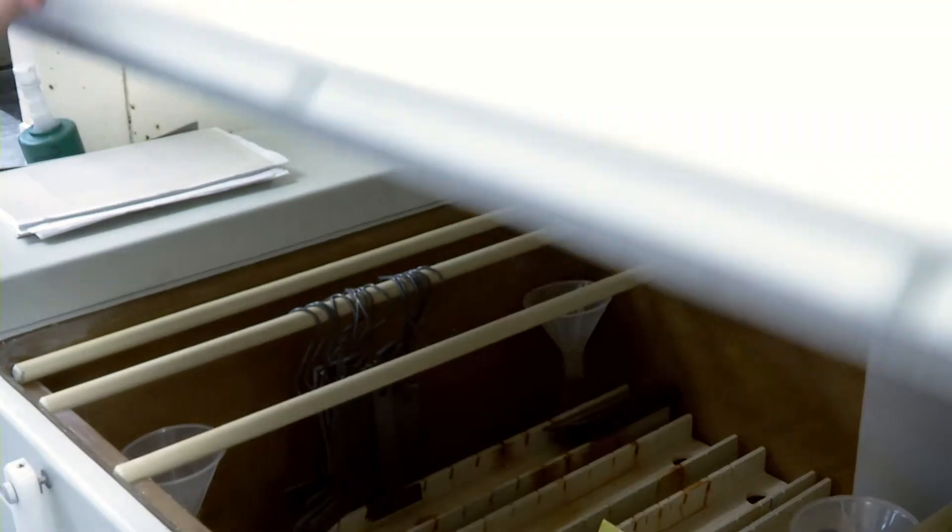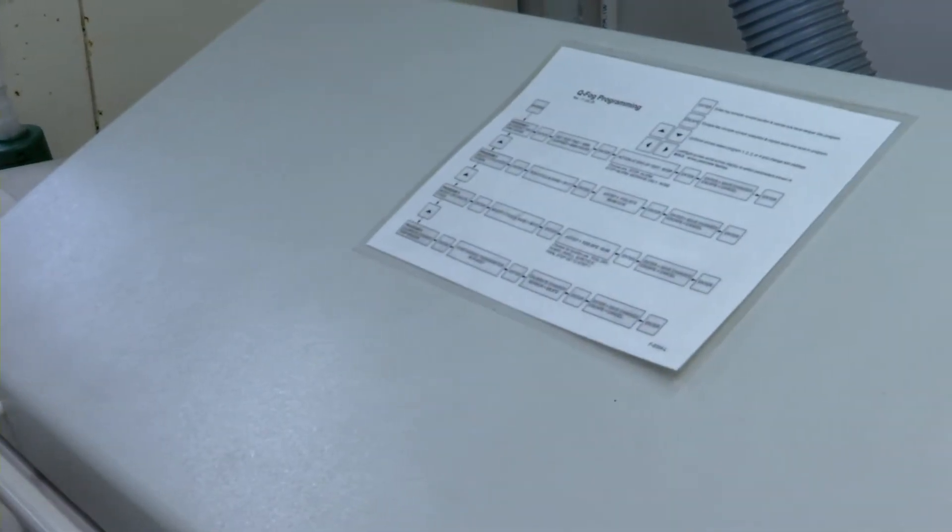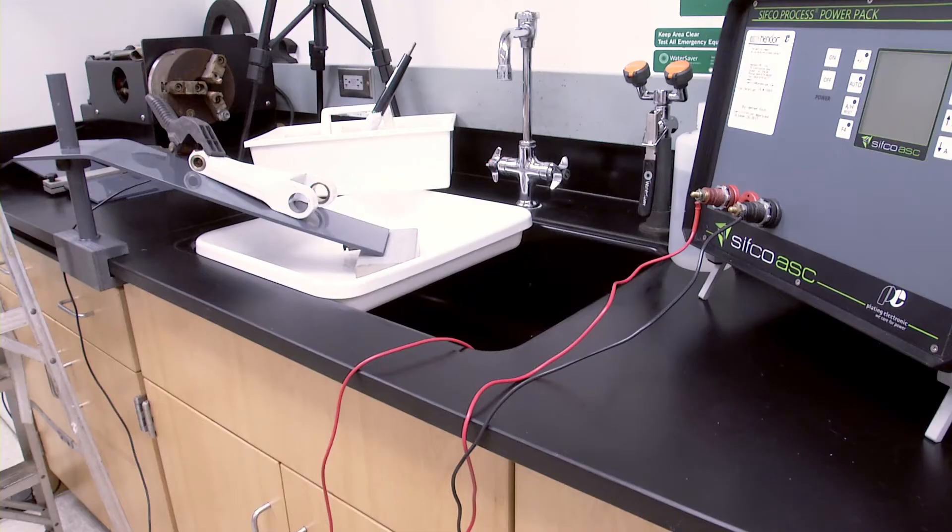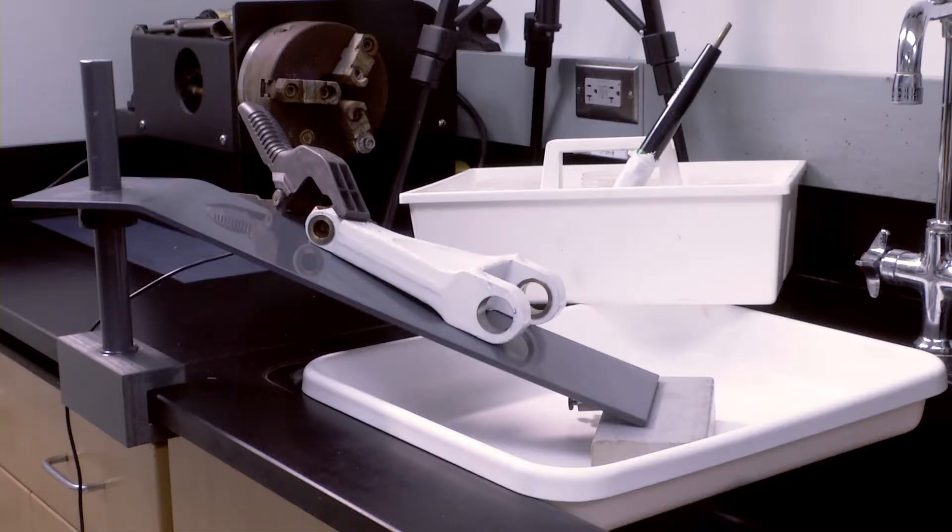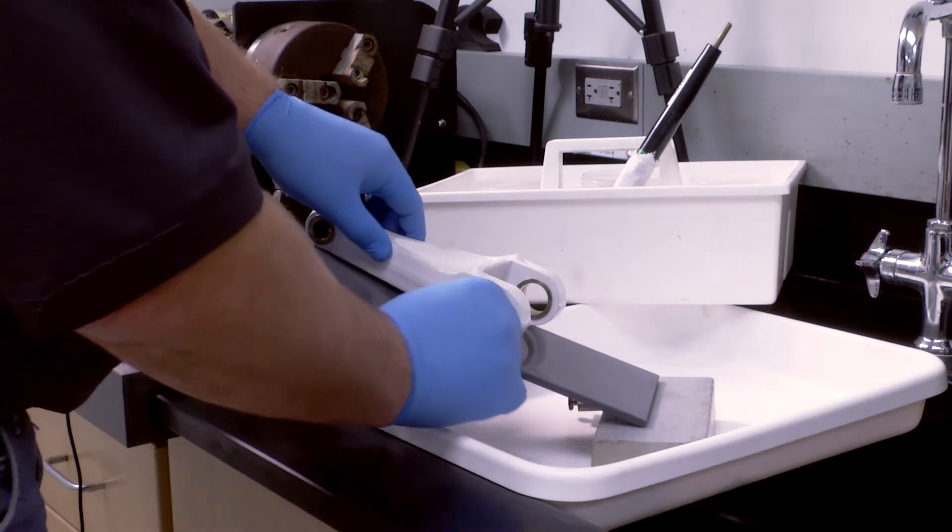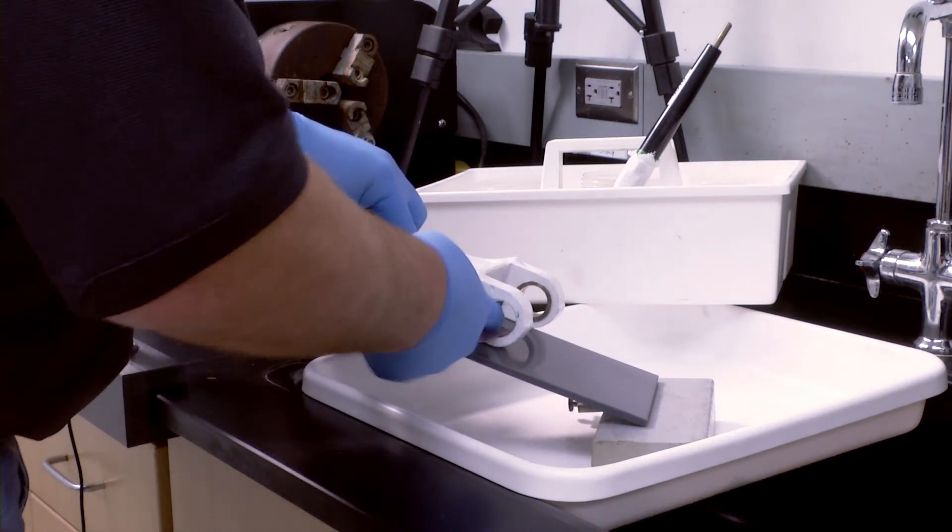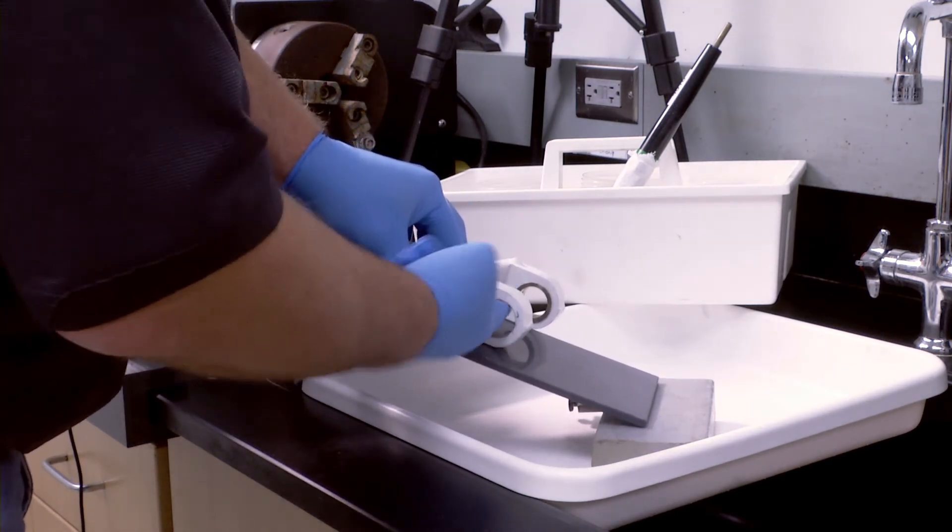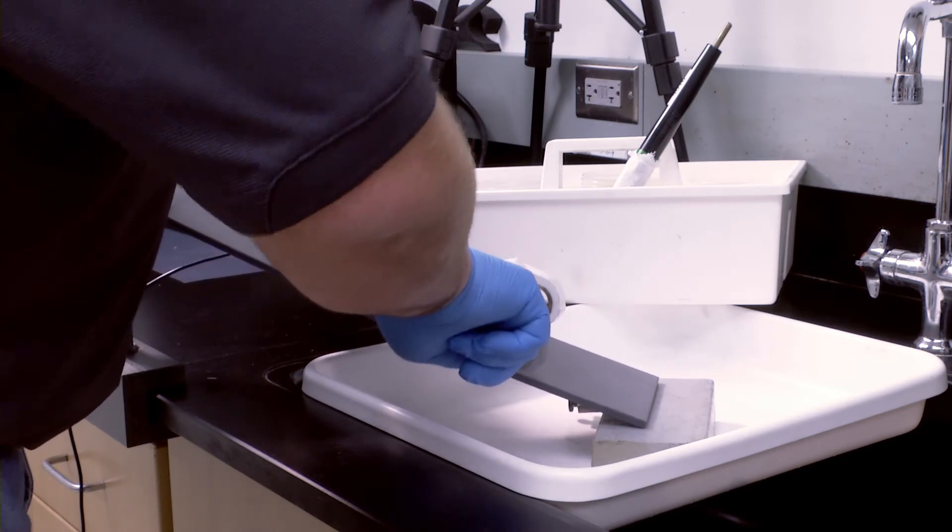Although some brush plating repairs to aircraft components are done in situ on the aircraft, many are done in the shop as components are being reworked. Because the components have been in service, it's important to ensure that they're properly cleaned to remove any grease or oil from the surface to be plated, as well as any adjacent areas.